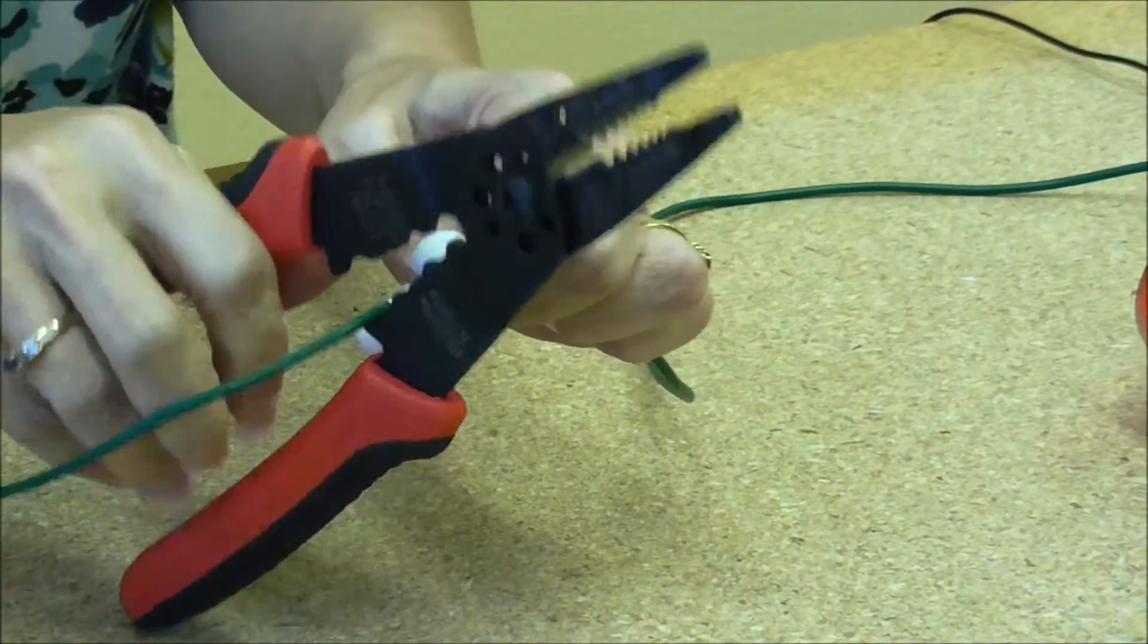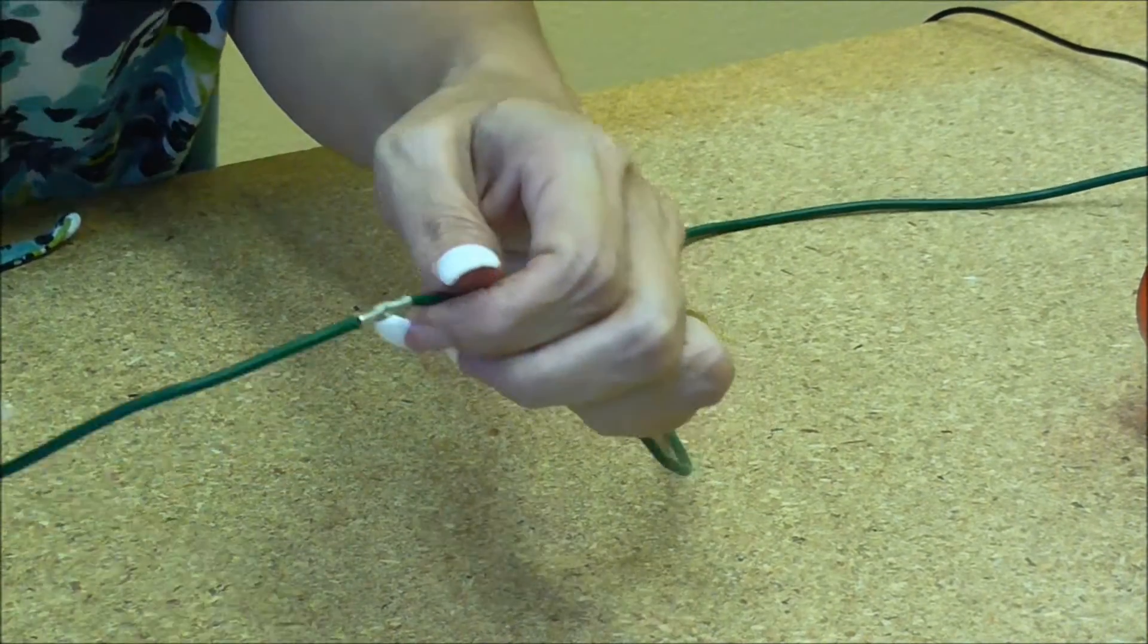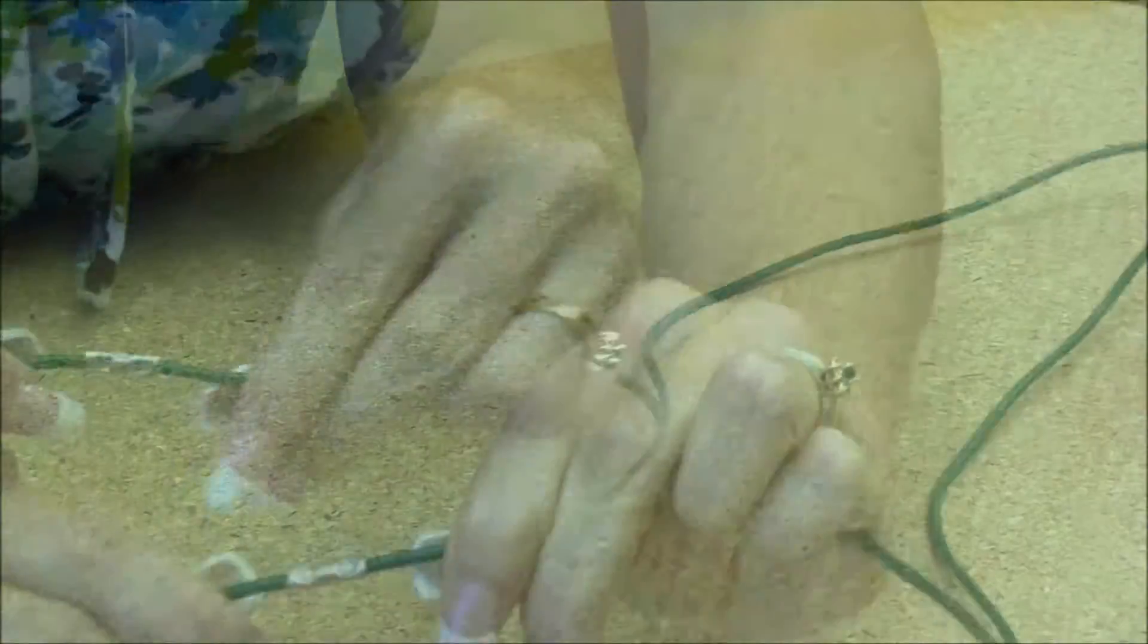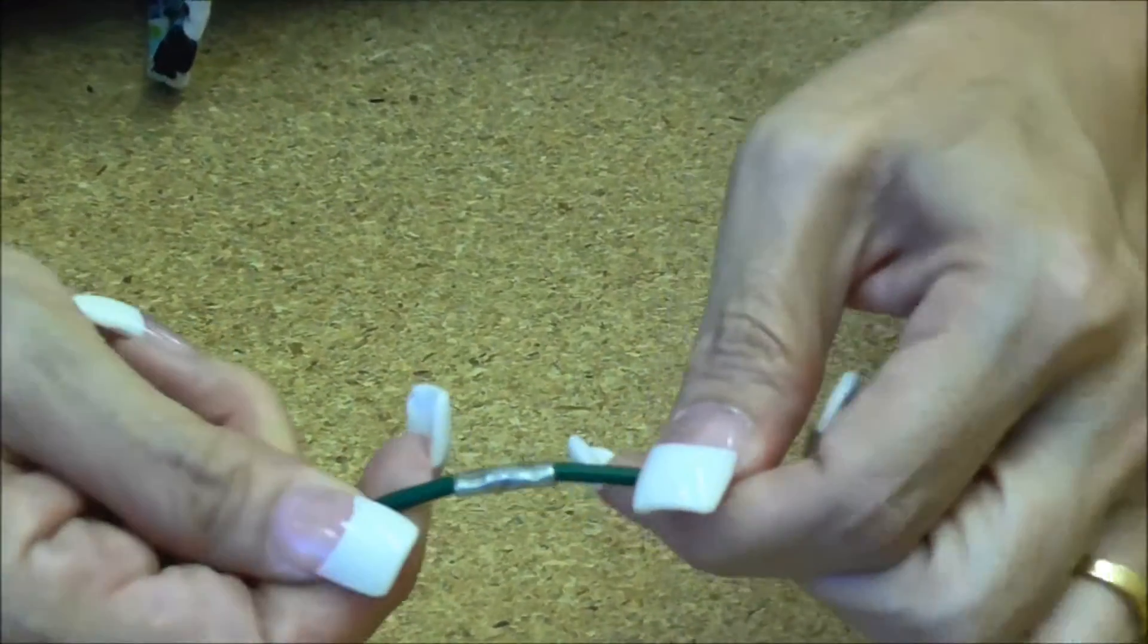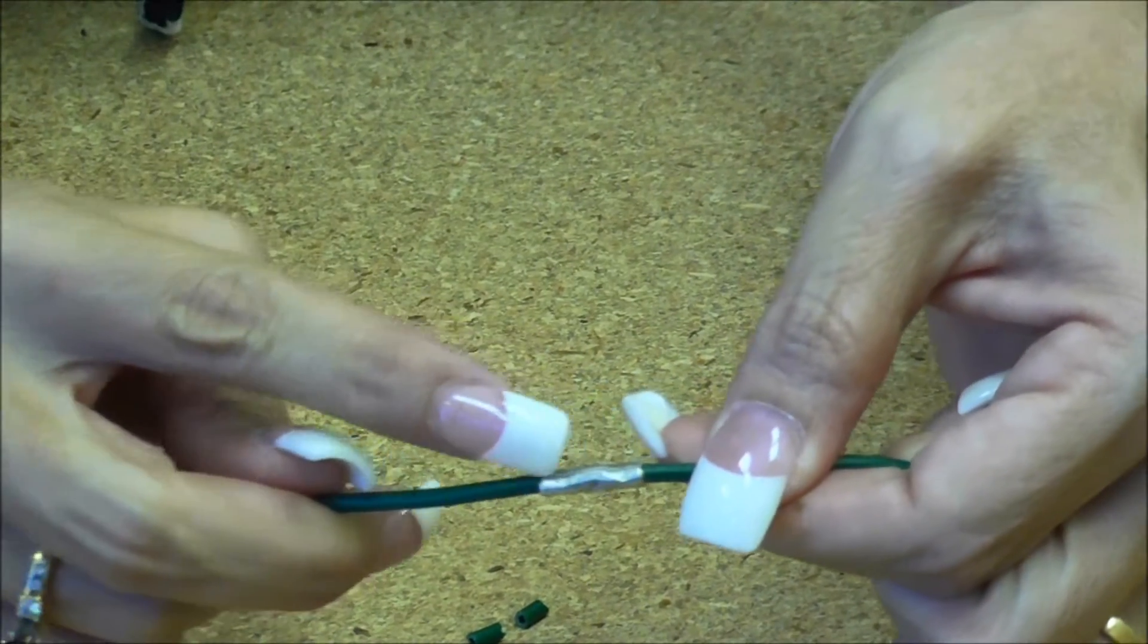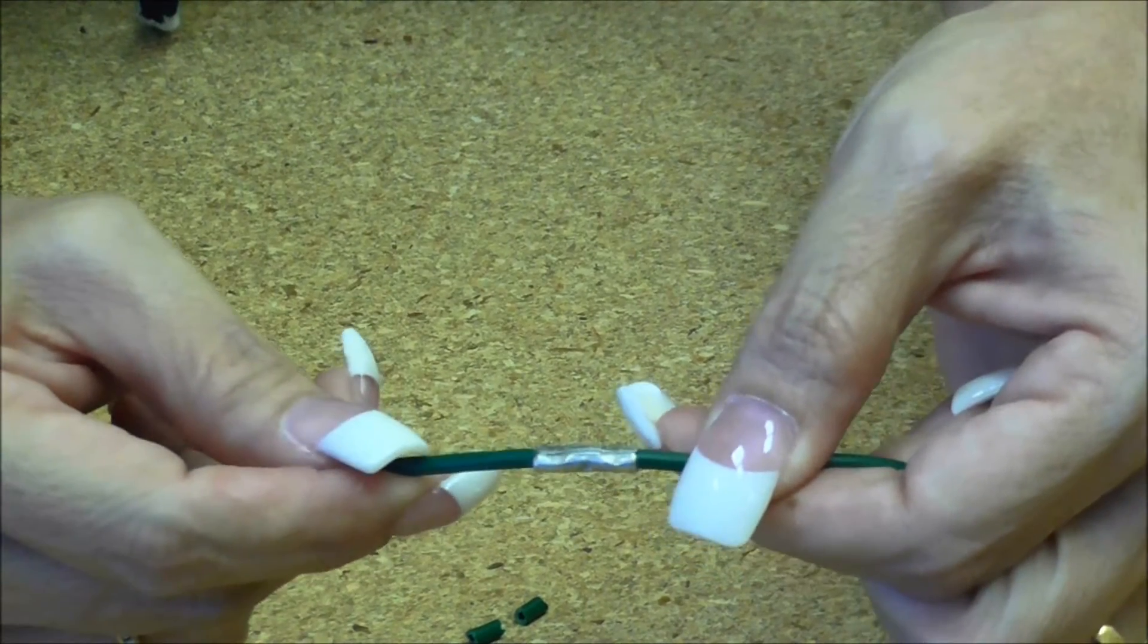And there you go. The dimple is going to be on the opposite side of where the seam is. That way it does not split on you.